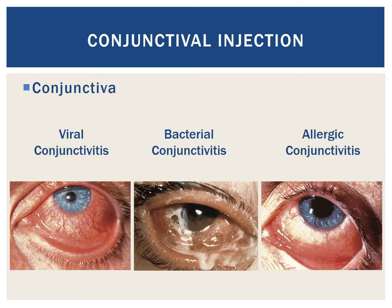Pathology within the conjunctiva can also lead to conjunctival injection. Conjunctivitis, which is inflammation of the conjunctiva, may be caused by many different organisms or environmental components, including viruses, bacteria, and allergens. The severity of the injection and the amount and character of the discharge depends on the specific etiology of the conjunctivitis. Learning the associated symptoms for each condition is helpful and will be discussed in more detail in a further video.